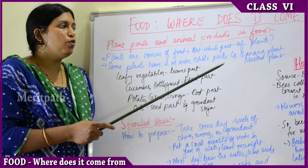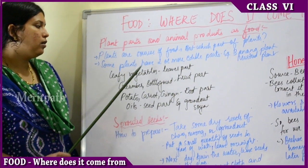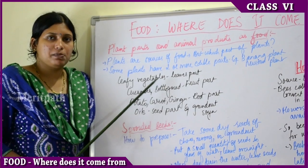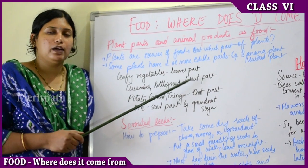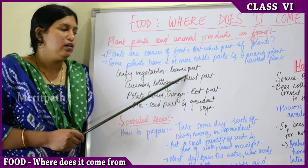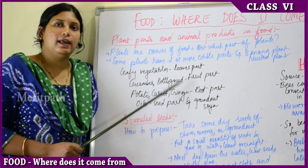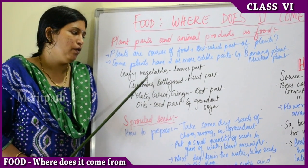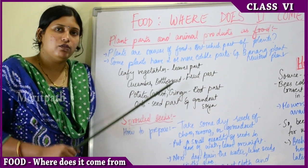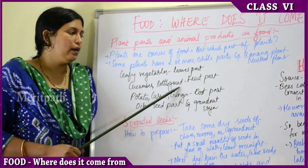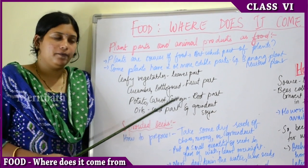We eat the leafy vegetables — that is the leaf part of the plant. We also eat the fruit part of the plant, like tomato, cucumber, or loki (bottle gourd).